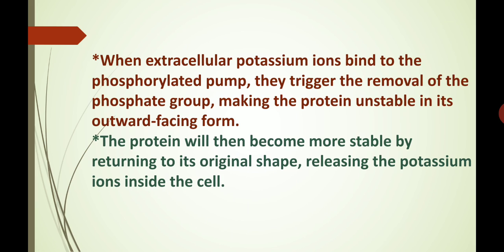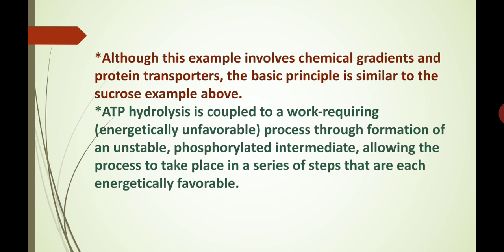When extracellular potassium ions bind to the phosphorylated pump, they trigger the removal of the phosphate group, making the protein unstable in its outward-facing form. The protein will then become more stable by returning to its original shape, releasing the potassium ions inside the cell. Although this example involves chemical gradients and protein transporters, the basic principle is similar to the sucrose example. ATP hydrolysis is coupled to a work-requiring, that is energetically unfavorable, process through formation of an unstable phosphorylated intermediate, allowing the process to take place in a series of steps that are each energetically favorable.